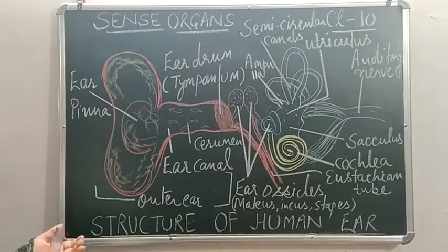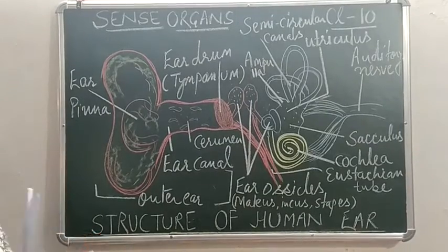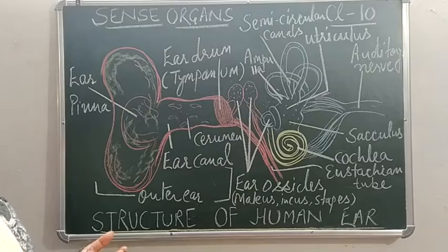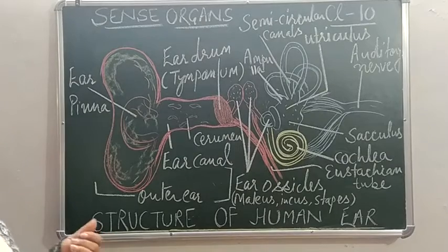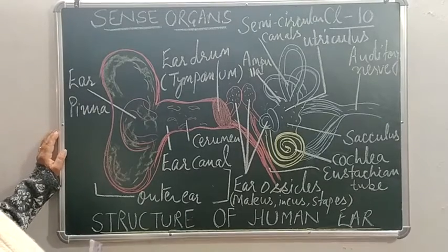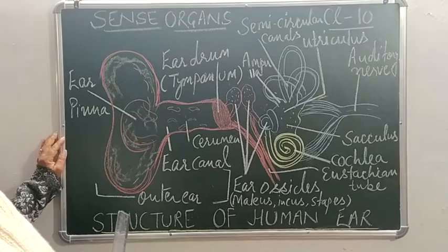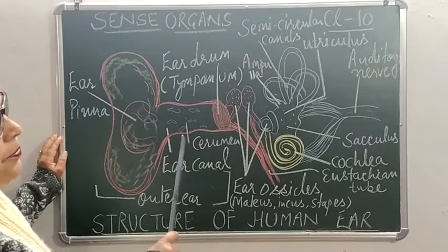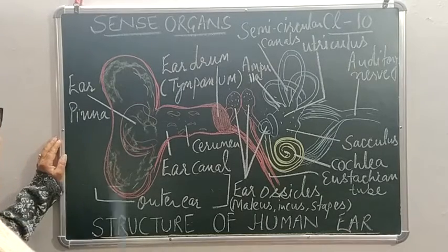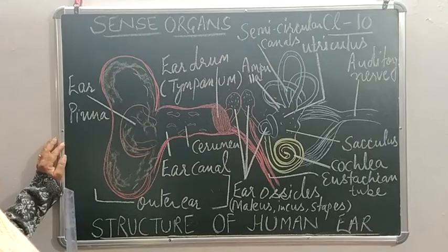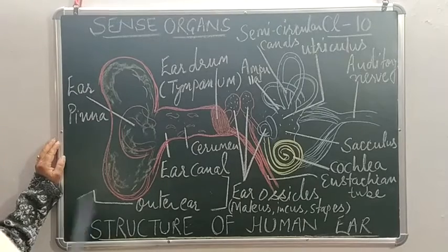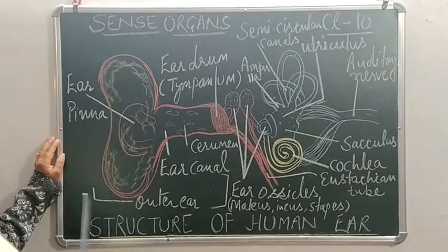Hello class 10. Today this video is in continuation with my previous video where I explained about some defects of the eye. Now another sense organ is the ear. You should know that the ear is an organ for hearing as well as for body balance, so the ear performs two functions: helping in hearing sound and maintaining balance.